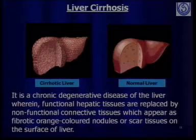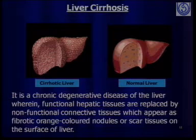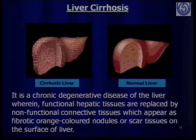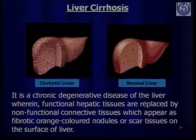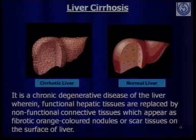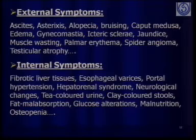Liver cirrhosis is the next most common and more difficult condition to handle. As seen in the figure, a normal liver structure is compared to a cirrhotic liver, clearly indicating that when the liver becomes inflamed and normal functional hepatic tissues are replaced by non-functional connective tissues, they appear as scar tissues or fibrotic orange-colored nodules on the surface of the liver — a characteristic identifying feature of liver cirrhosis.